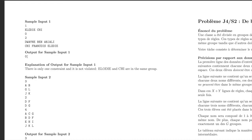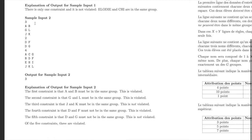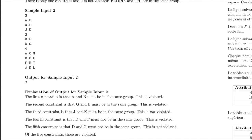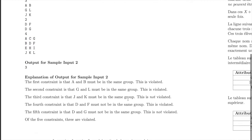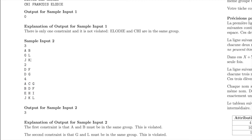Let's look at the more complex sample input. x is three: A and B must be in the same group, G and L must be in the same group, and J and K must be in the same group. J and K are in fact in the same group — not violated. But G and L are in different groups — violated. And A and B are also in different groups instead of the same group — violated. So that's two violations from same-group constraints.